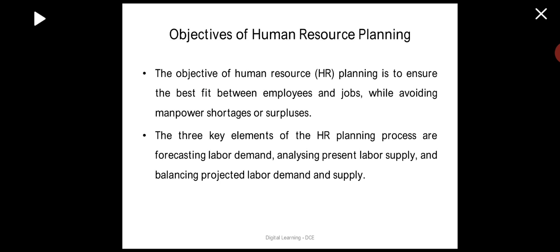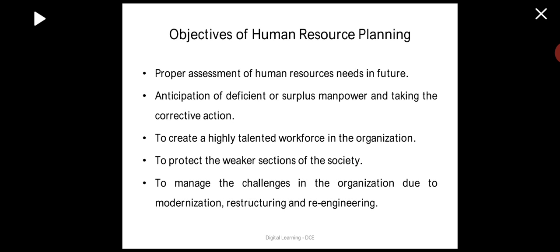The three key elements of the HR planning process are: forecasting labor demand, analyzing present labor supply, and balancing projected labor demand and supply. In the HR planning process, the first element is to see what the labor demand will be in future, assess what number of labor we have in the organization, and then balance projected labor demand and supply through human resource planning.